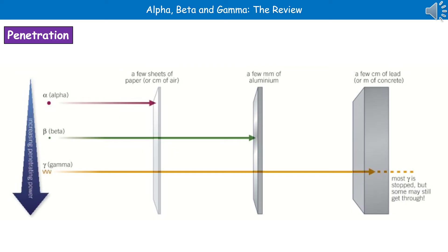This diagram summarises one of the most important properties to remember about alpha, beta and gamma radiation: their ability to penetrate materials. Alpha particles are the least penetrating and are stopped by just a few sheets of paper. Beta particles pass through paper but are stopped by a few millimetres of aluminium. Gamma rays go through both paper and aluminium, and are only stopped by a few centimetres of lead or a few metres of concrete — and even then, not necessarily all of it. So gamma rays are the most penetrating, and alpha particles are the least.